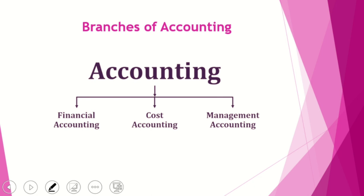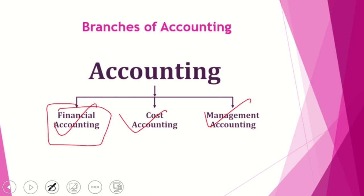The last topic is branches of accounting. There are three branches: financial accounting, cost accounting, and management accounting. Financial accounting involves identifying, recording, classifying, analyzing, and communicating events and transactions to various users. The purpose of financial accounting is to determine the profit or loss of the business in a particular accounting period, ascertain the financial position of the business, and provide information to various users.